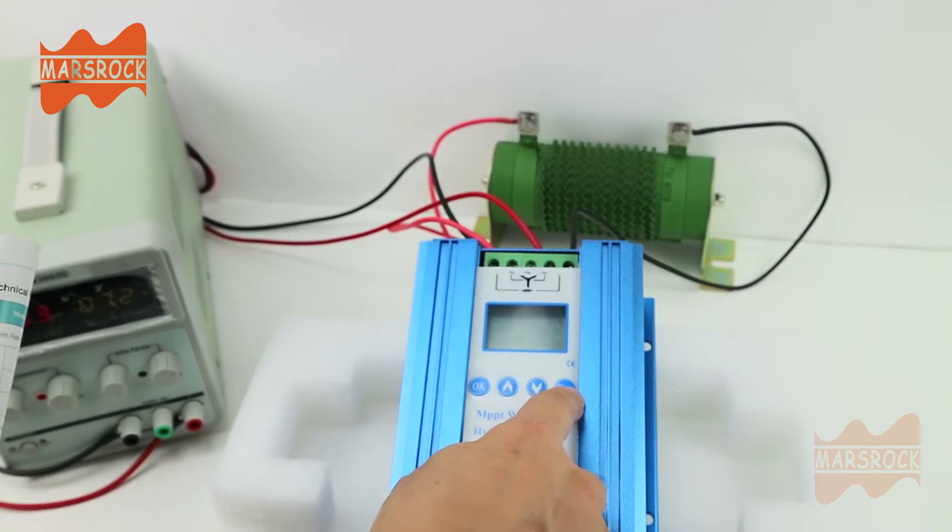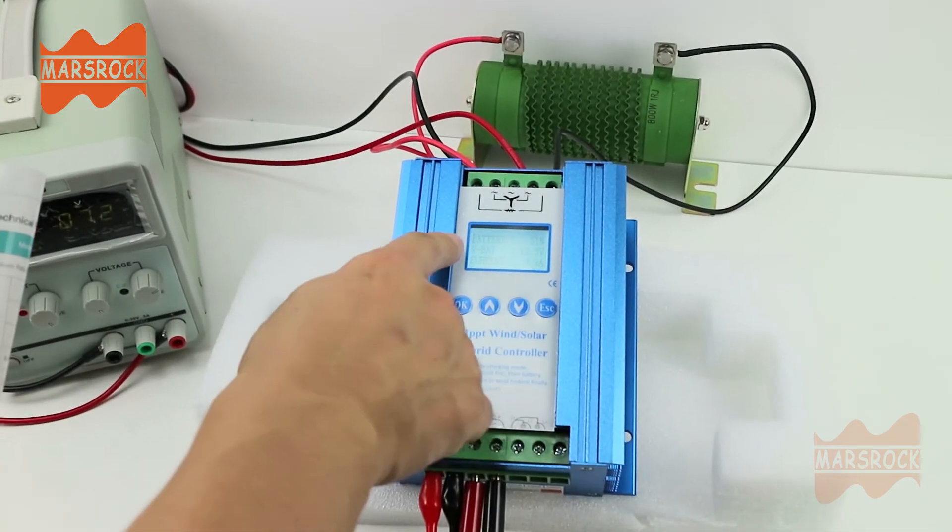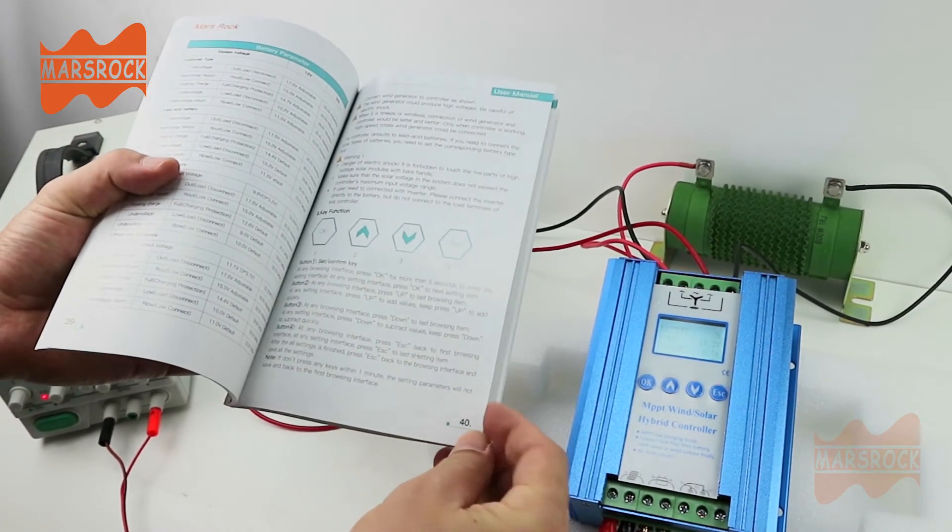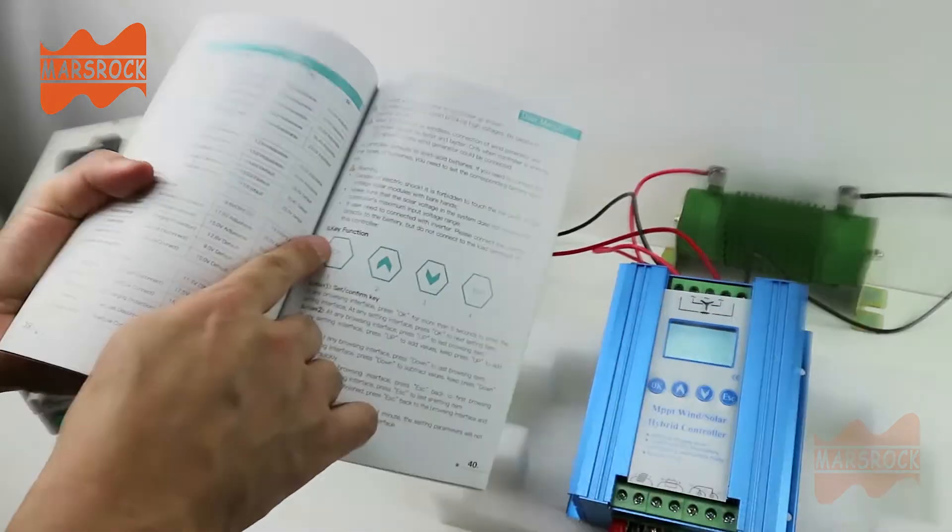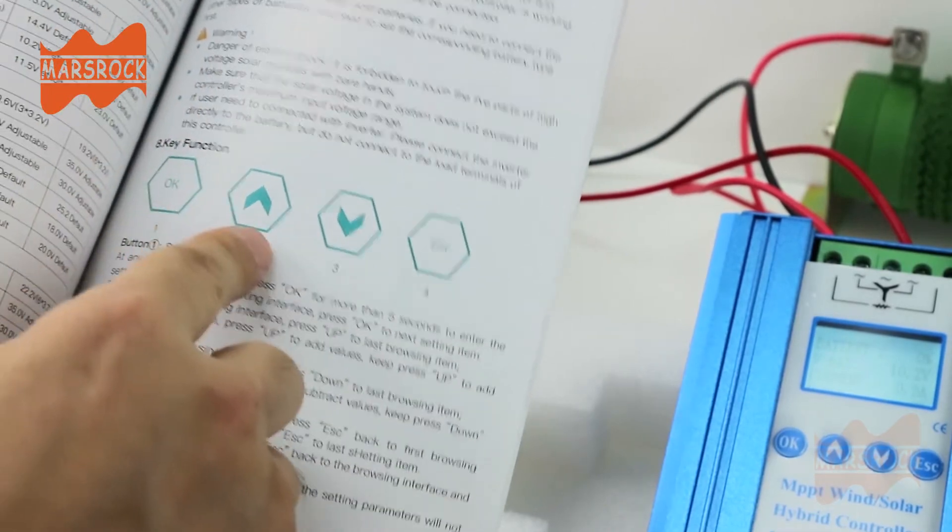Battery is in charge now. Page 40. You can see how to operate this control. This is a button, button operate step.